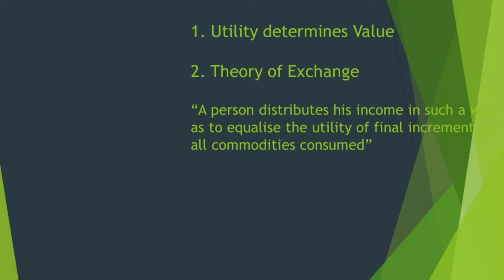Though classical economists popularized the diamond-water paradox, they could not explain the right reason behind it. But Jevons, through his utility theory of value, explained that the solution to this paradox lies in the marginal utilities and relative scarcity of the commodities. Thus, Jevons succeeded where the classical economists failed.